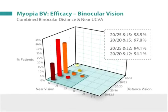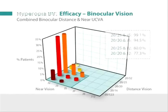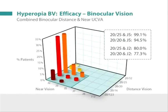Ninety-eight percent of myopic patients could see 20/20 at distance and read J5 at near. Ninety-five percent of hyperopic patients could see 20/20 at distance and read J5 at near.